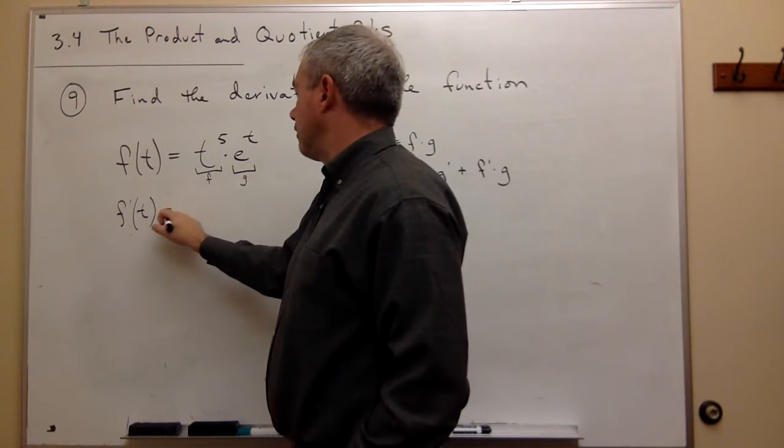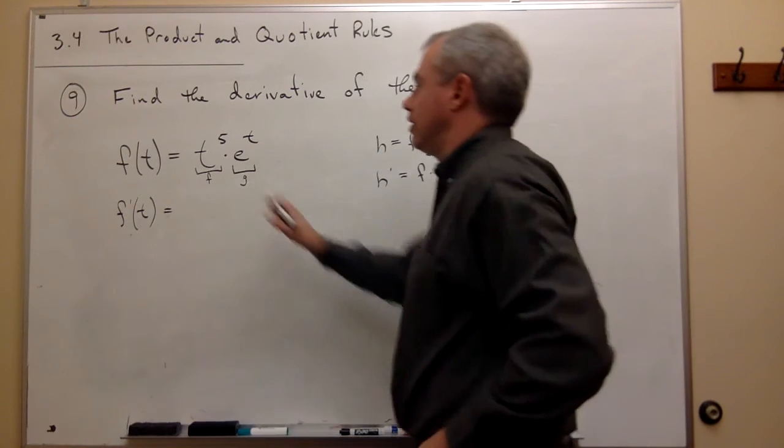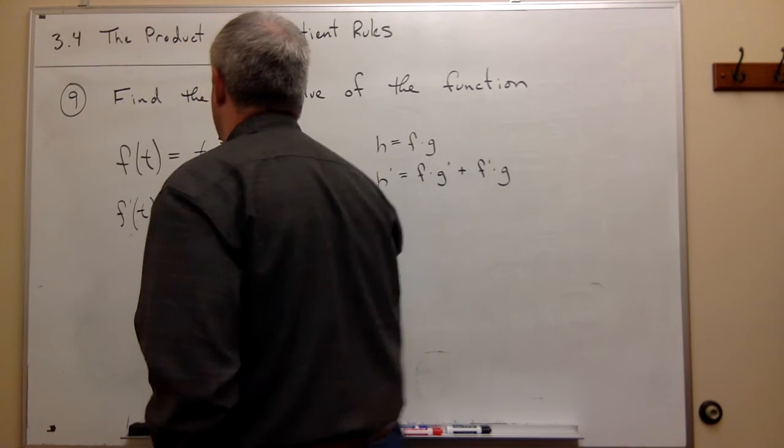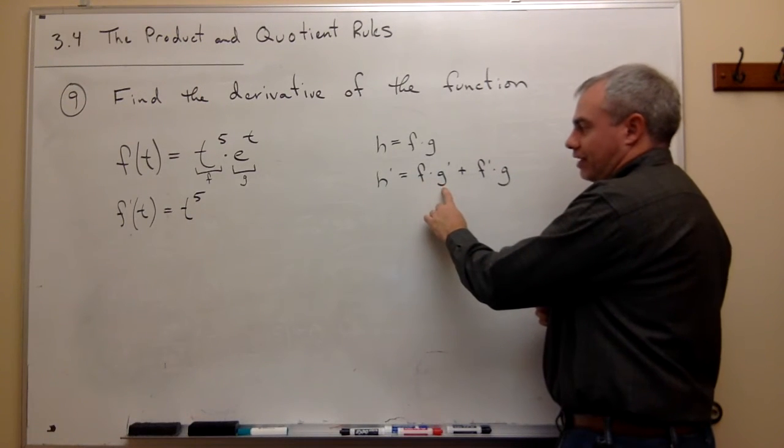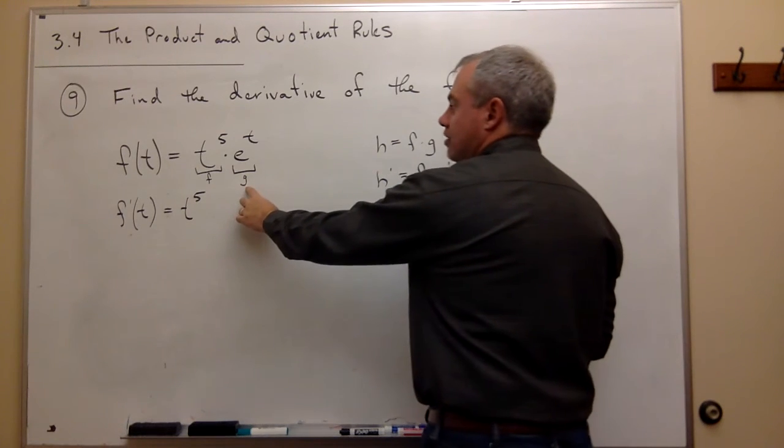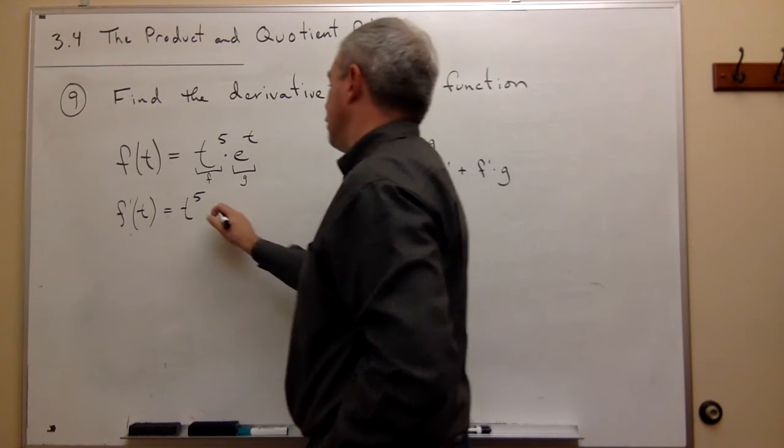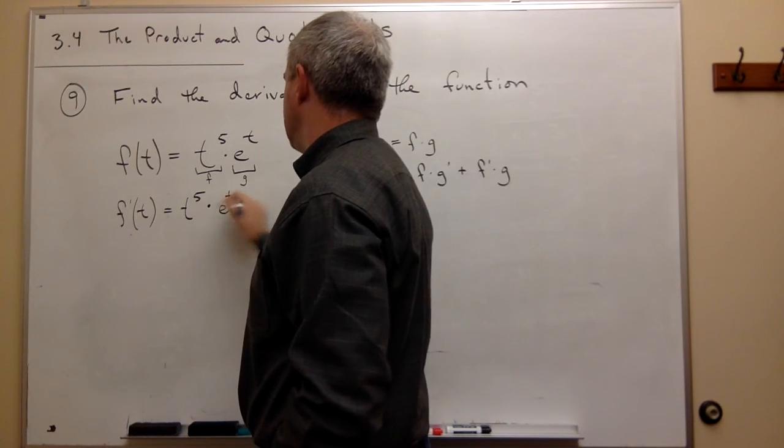So what I need, if I'm taking the derivative, is I want to leave the first function alone. So t to the fifth. And then I want to multiply the first function by the derivative of the second function, g. So what's the derivative of g? Well, g is e to the t, and the derivative of e to the t is e to the t.